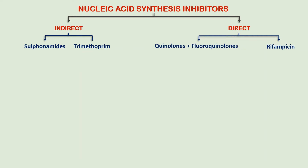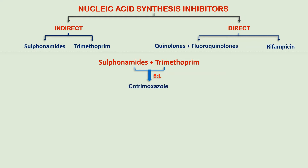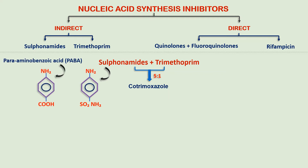Directly acting agents also include fluoroquinolones and rifampicin. In this lecture we are going to talk about sulfonamides and trimethoprim. Sulfamethoxazole and trimethoprim are mixed in a ratio of 5 to 1 to make cotrimoxazole, which will also be discussed here. Regarding the mechanism of action of sulfonamides, they have a structural resemblance with PABA — that is, para-aminobenzoic acid. What sulfonamides do is basically replace PABA in the folic acid synthesis, thereby inhibiting folic acid synthesis.